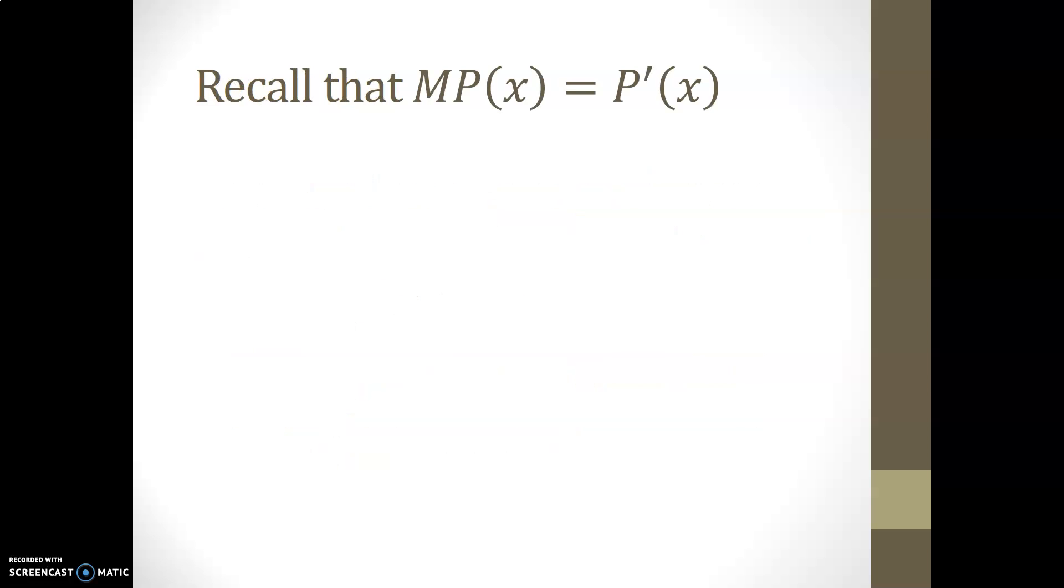Now, I think it's a wise idea to recollect what it means to have a marginal profit. In fact, this is just vocabulary used in business or in economics where marginal profit is actually the derivative of the profit function. So essentially, what we are given in this example is the derivative of the profit function to be equal to 48 minus 2.4x.